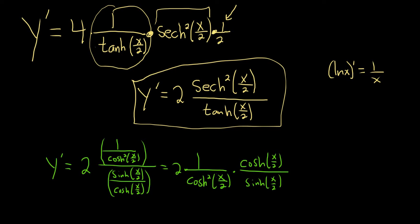And then sure enough, some stuff just cancels. We lose a copy of the hyperbolic cosine. So we're left with 2 times 1 over hyperbolic cosine, and then here we have 1 over hyperbolic sine.